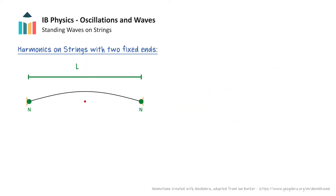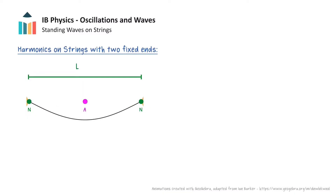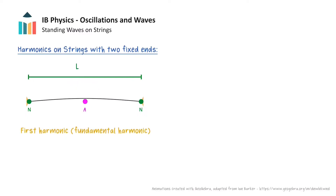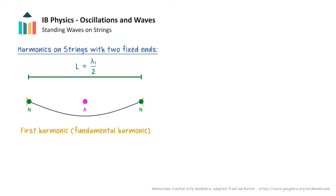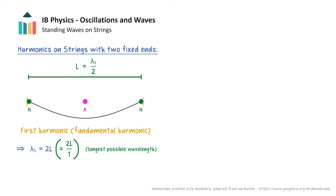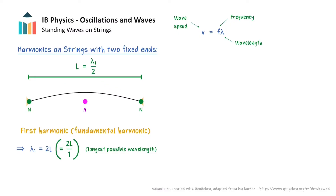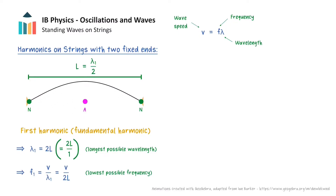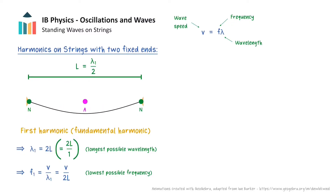The longest possible wavelength of standing wave that can be formed is one where there is one antinode between the two nodes as shown in this animation. This standing wave is called the first harmonic and can sometimes be referred to as the fundamental harmonic frequency. Since nodes are spaced half a wavelength apart, the wavelength of the first harmonic, which we have denoted with a subscript 1, can be expressed in terms of the length of the string. This wavelength corresponds to a specific frequency, which is the lowest possible frequency of standing wave that can be formed. Since the speed of a wave equals the frequency multiplied by its wavelength, the frequency of the first harmonic can be determined accordingly. This is also considered to be a natural frequency of the string, one of the frequencies that it will oscillate at when plucked.